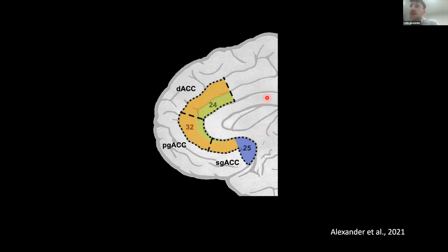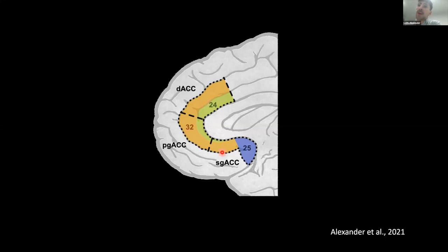Highlighted is the anterior cingulate cortex. Here is the corpus callosum — the bundle of white matter that joins the two hemispheres — and this part is known as the genu or knee of the corpus callosum. The sub-regions of the anterior cingulate cortex are defined relative to the genu: we have a dorsal ACC, perigenual, and subgenual — the three main regions. In colors are the different cytoarchitectonic regions comprising these subdivisions, based on one atlas: Brodmann area 32 in orange, Brodmann area 24 in green, and Brodmann area 25, which sits quite caudally in the subgenual anterior cingulate cortex.